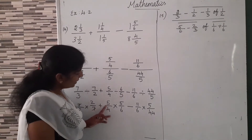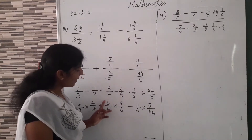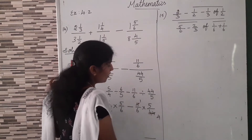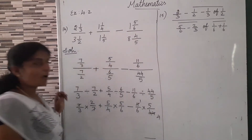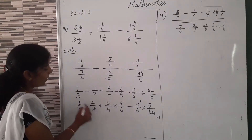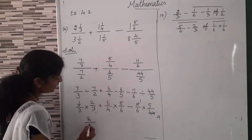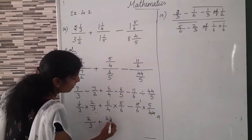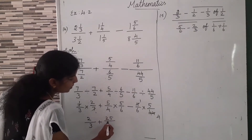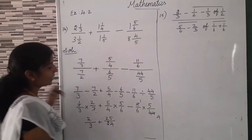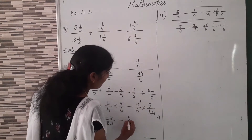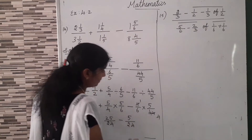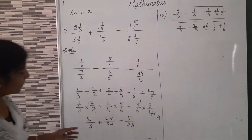Now we can cut here: 7 and 7. Then 2 and 3 are prime numbers, we don't cut. Then here we can cut using the 5 table: 4 and 2. Here the 11 table: 1 eleven is 11, 4 elevens are 44. Now we can multiply and write. 1 into 2 is 2, by 3 into 1 is 3. Plus 5/4 — 5 fives are 25, by 6 fours are 24. Minus 1 into 5 is 5, by 6 fours are 24.